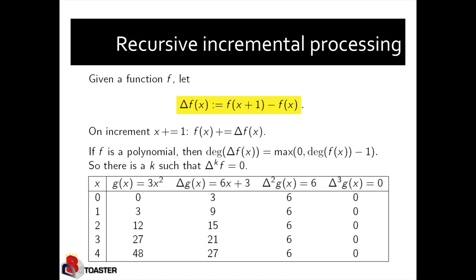Let's take a concrete example. Let's assume we want to study the function g of x equals 3x squared. We can pre-compute the delta of g of x, and that is 6x plus 3. That means as we increment x by 1, we have to add 6x plus 3 to 3x squared to get 3 times (x plus 1) squared. We can take the delta of this delta query — delta squared of g of x — and that delta is 6, meaning as we increment x by 1, 6x plus 3 is incremented by 6. Taking a third delta, the delta of 6 as we increment x by 1, since 6 doesn't depend on x, this delta is 0. So here we are done.